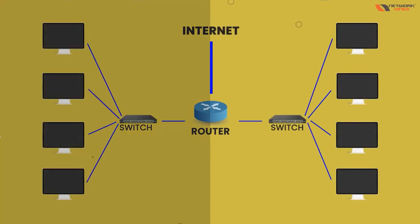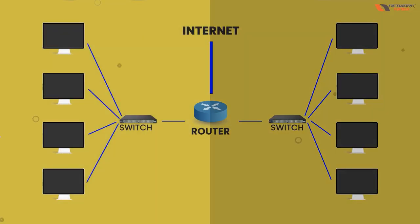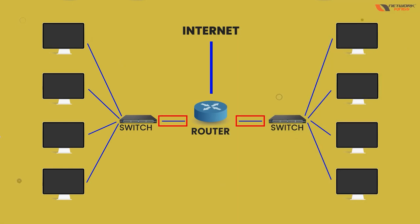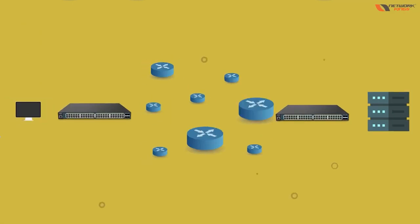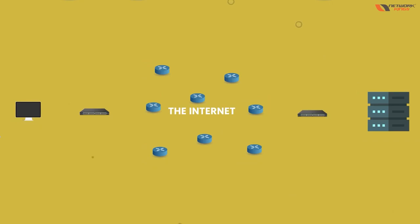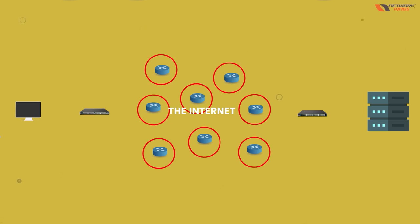After that we have a device which is like the father of internet devices — the router. Basically, if you want to connect two different networks, because two different networks cannot communicate by default. The internet is also a different network, that's why everyone needs a router. A router connects two or more different networks together — this is how we build the internet.